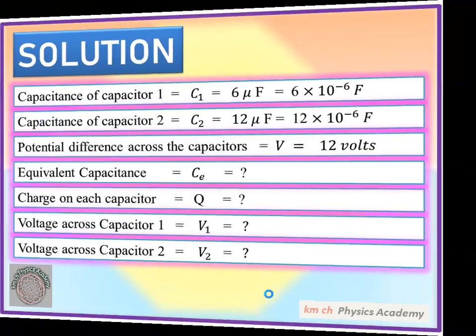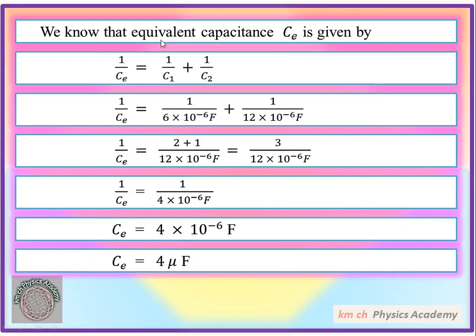We know that when capacitors are connected in series, the equivalent capacitance is given by the formula: 1/Ce = 1/C1 + 1/C2. Here Ce is the equivalent capacitance, C1 is the capacitance of capacitor 1, and C2 is the capacitance of capacitor 2. We have values of both C1 and C2, and we need to find Ce.